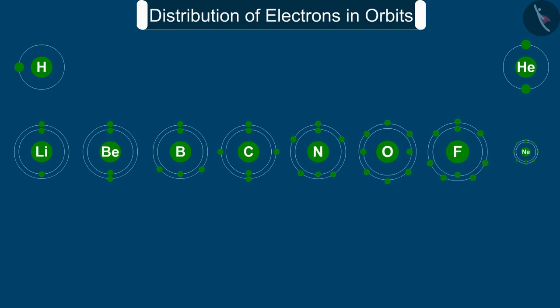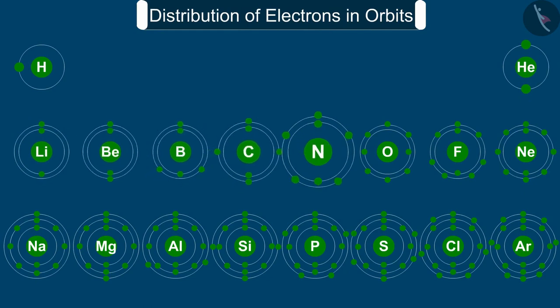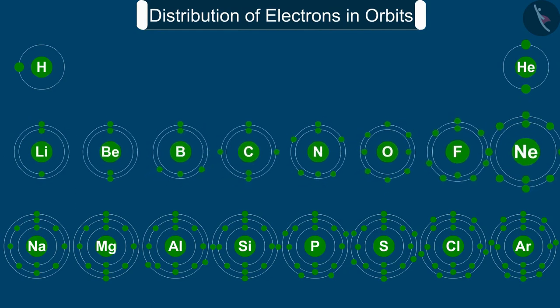Atomic structure of the first 18 elements is shown schematically here. We have learnt how the electrons in an atom are arranged in different shells or orbits.